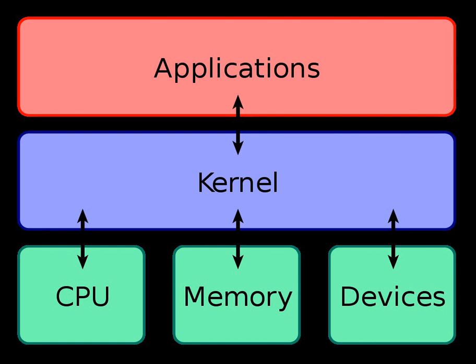The rationale was that it would bring modularity in the system architecture, which would entail a cleaner system, easier to debug or dynamically modify, customizable to users' needs, and more performing. They are part of operating systems like Newherd, Minix, MKLinux, QNX, and Redox OS. Although microkernels are very small by themselves, in combination with all their required auxiliary code, they are often larger than monolithic kernels.